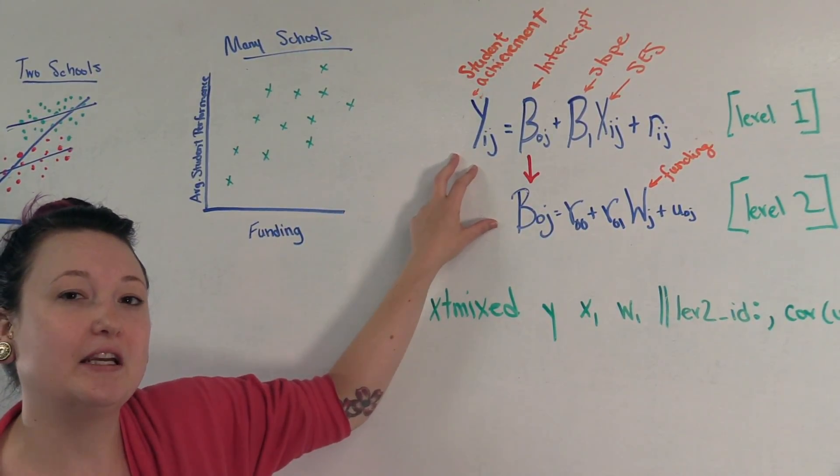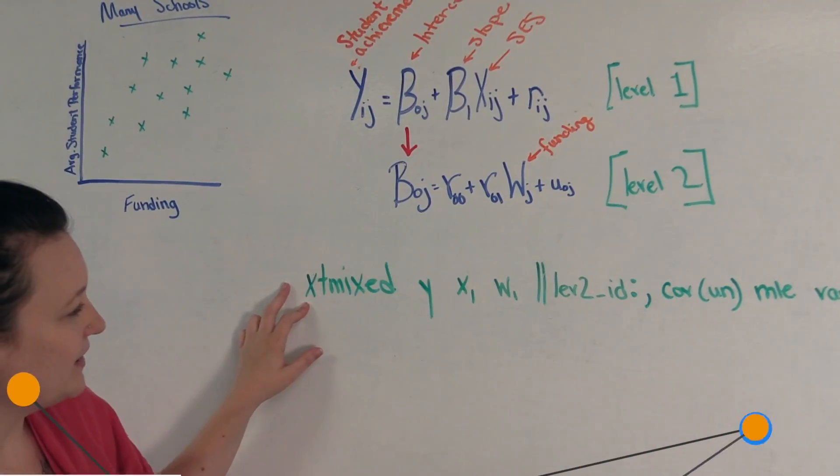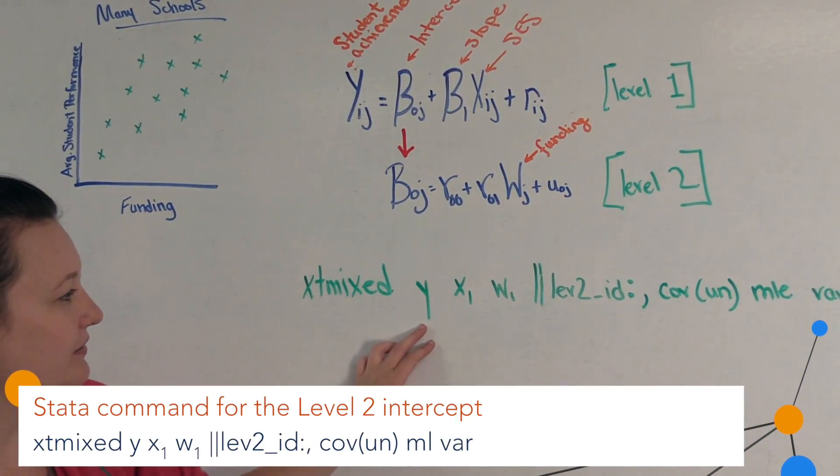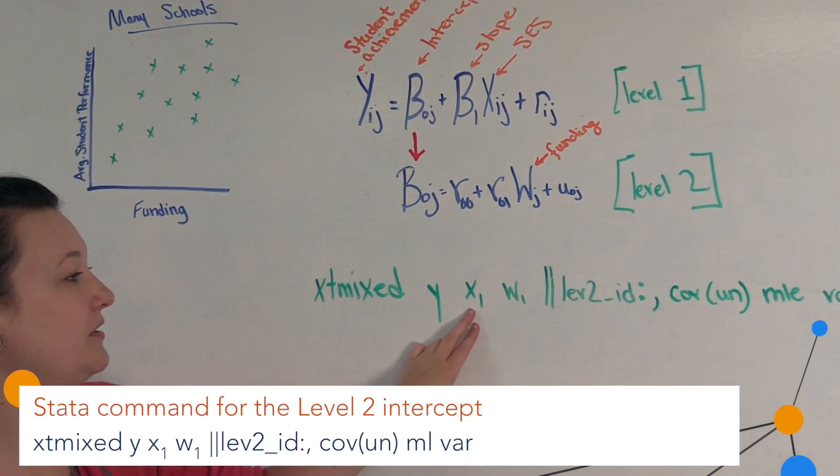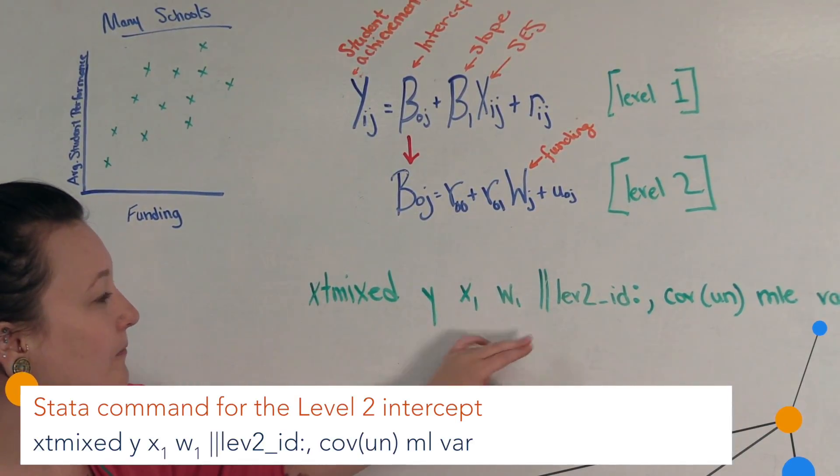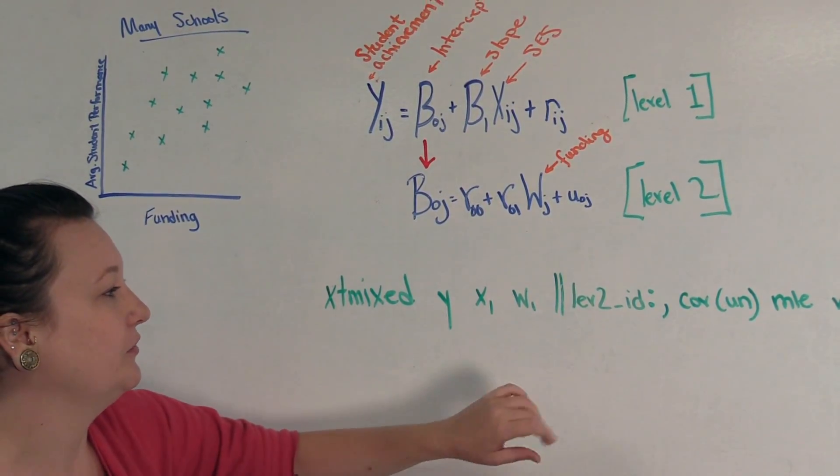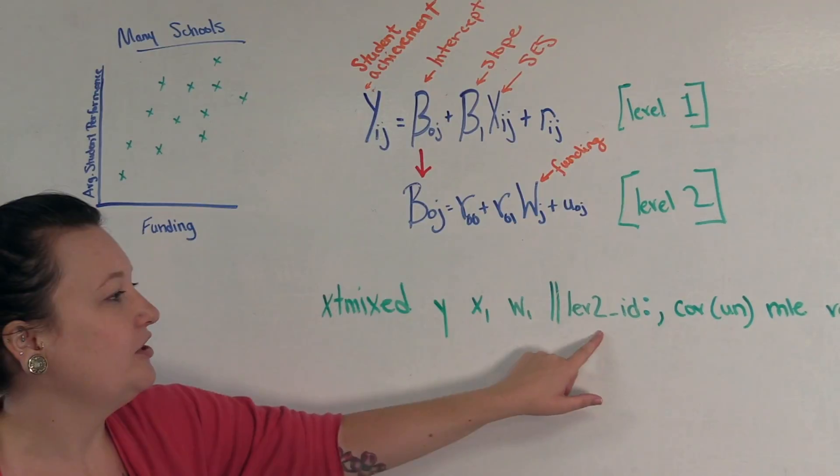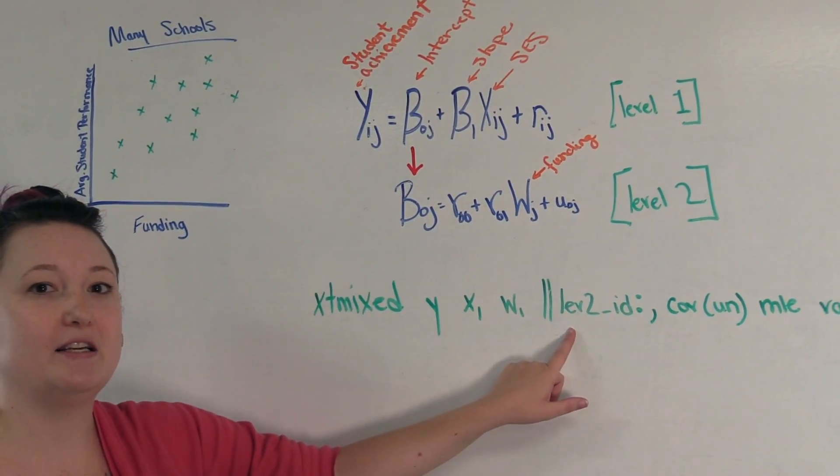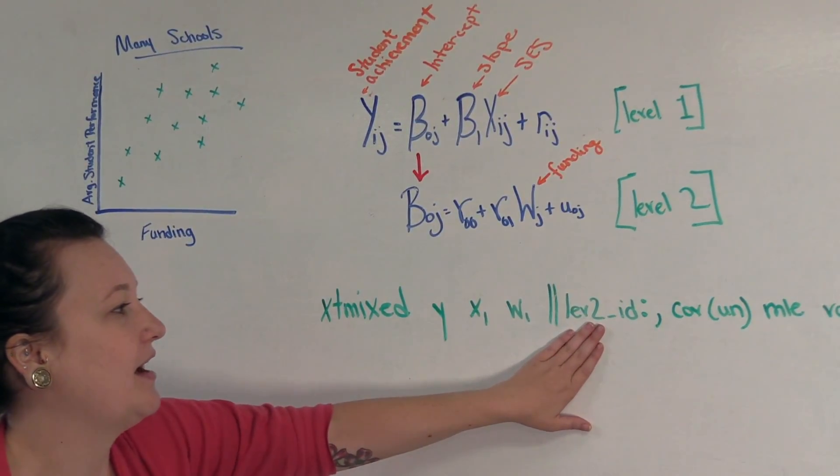This can be estimated pretty easily in Stata using the xtmixed command. With xtmixed, you'd include your dependent variable, your level one independent variable, your level two independent variable. And these could be extended to include multiple independent variables at both level one and at level two, the double bars. Then you would use your level two id variable. In this case, it would be school number, school name, something of that sort.